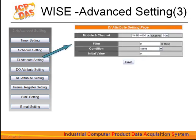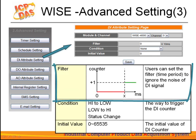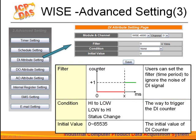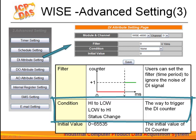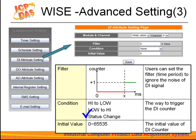Now we come to the digital input attribute setting. Digital input channels are used as counters. DI signals may face interference, so you can set a mask in the filter field to rule out interference. The time interval for the filter is the minimum duration a signal has to sustain to make a change to the counter. In the condition field, please set the trigger criteria for the counter. There are three options: high to low, low to high, and status change.